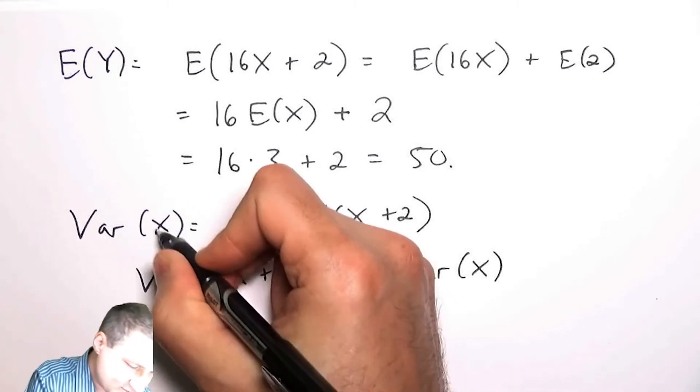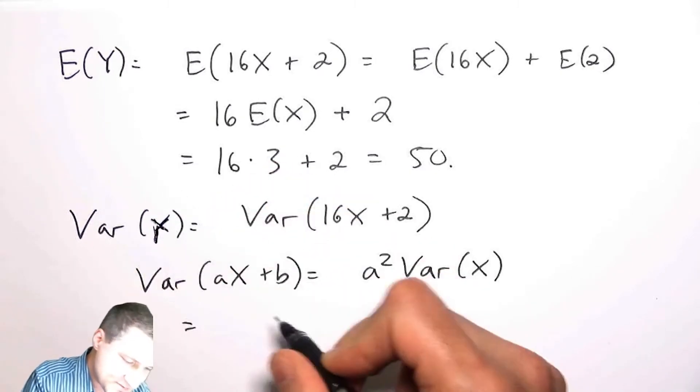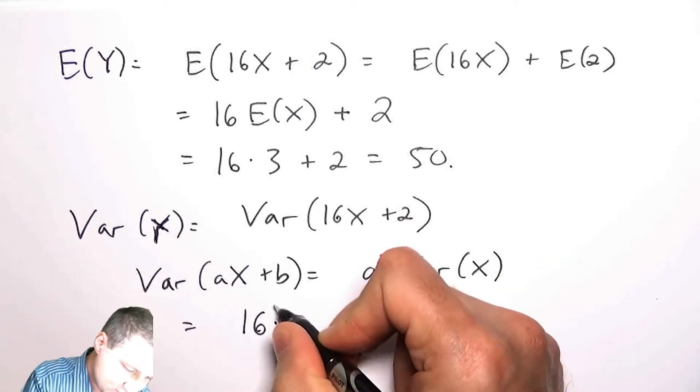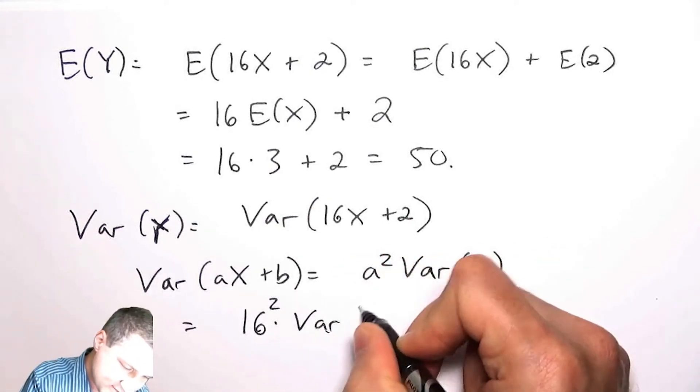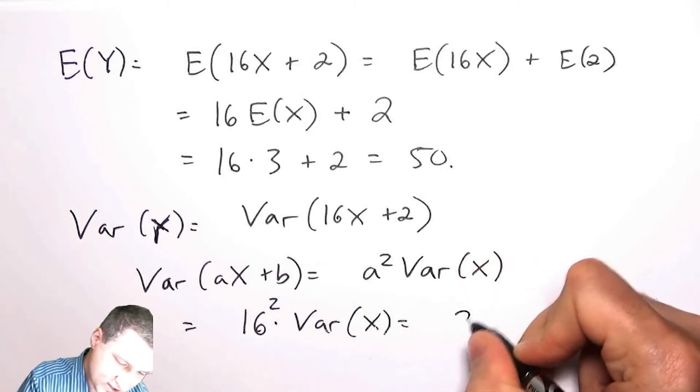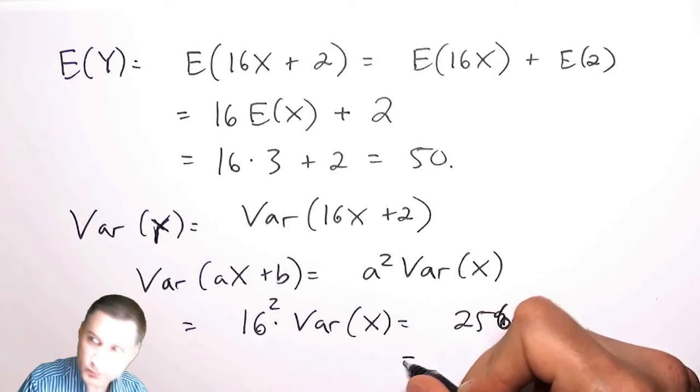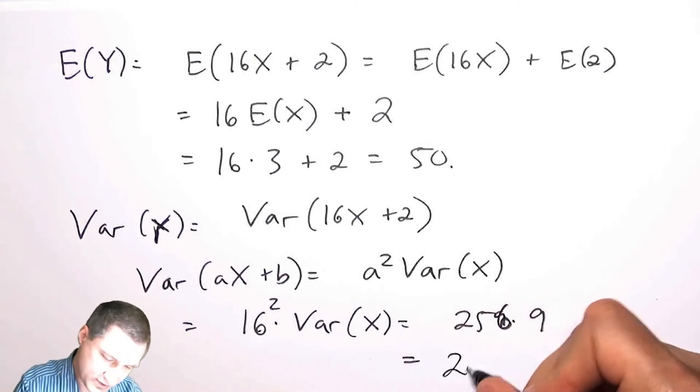This means that the variance of 16X plus 2 is just 16 squared times the variance of X, which is 256 times 9, which is 2304.